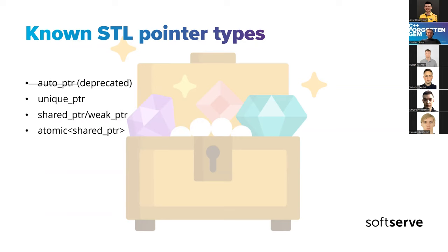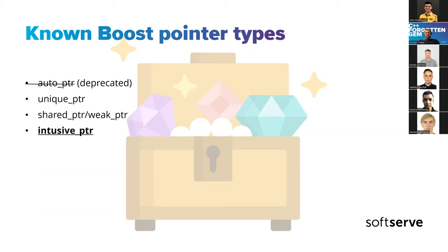Let's see what the Boost pointer types are. There is auto pointer, which also got deprecated; unique pointer; shared and weak pointer; and one other pointer called intrusive pointer. I'd like to talk a bit about the difference. If you know all the smart pointers in the standard library, they are not intrusive.